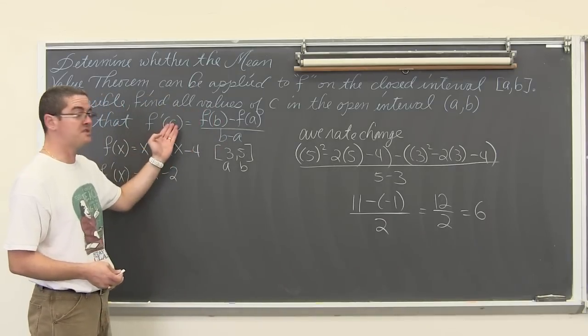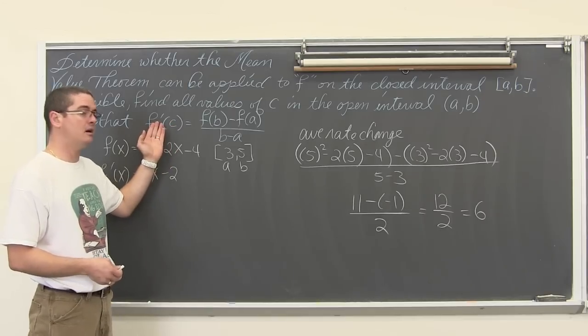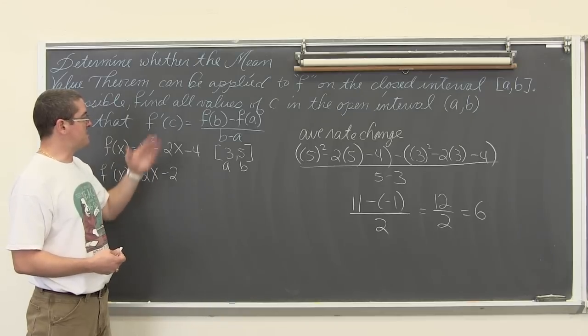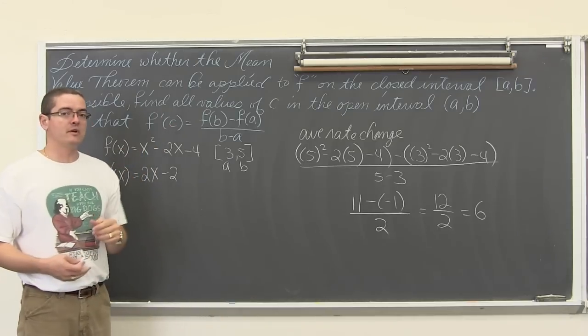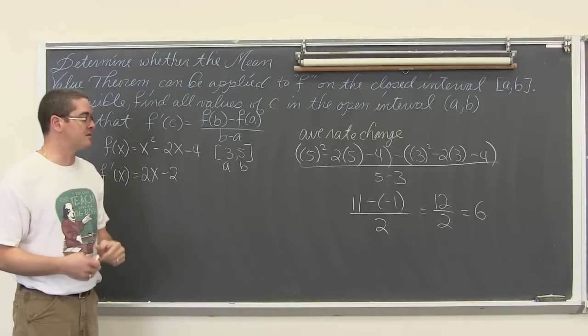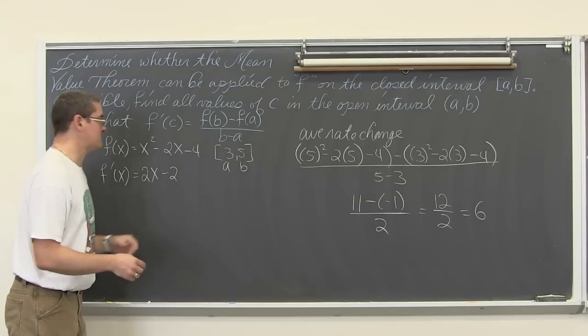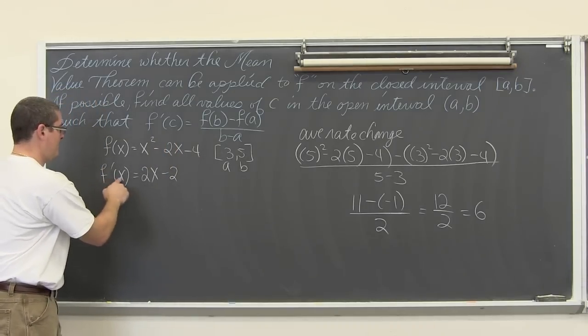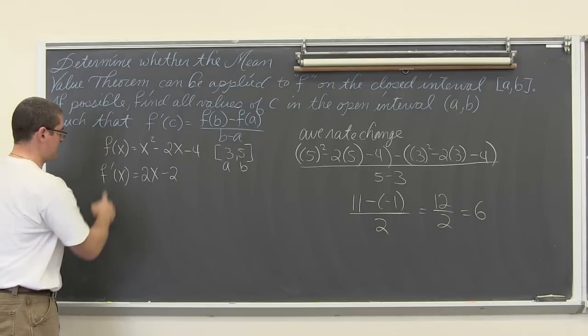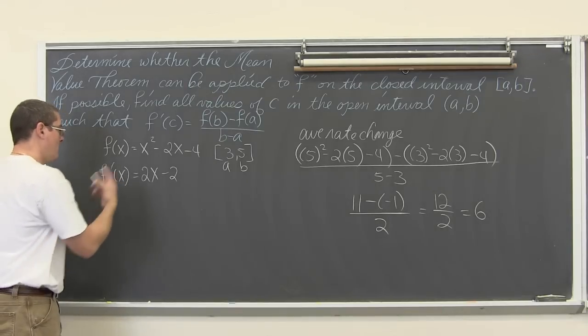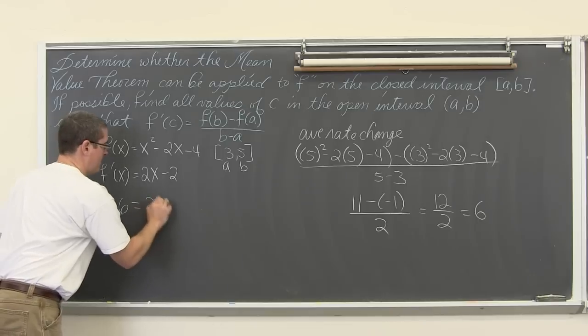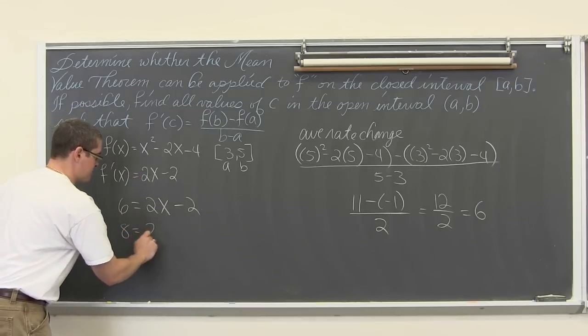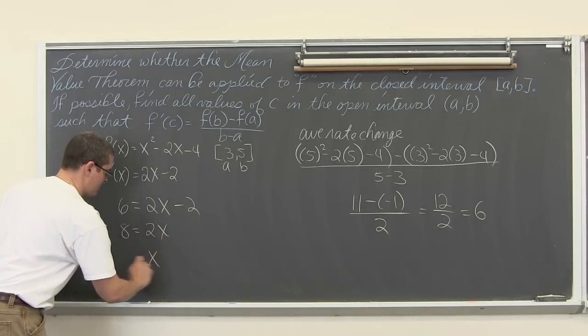So can we find a value of c such that the instantaneous rate of change, or the slope of that value of c, is there a value of c which makes the first derivative, the slope of the curve, the slope of the tangent line, equal to 6? Well I think so. It is a pretty basic formula here. So f'(x), or we are looking for c, the slope, well that is going to be 6 = 2x - 2, add 2 to both sides, we get 8 = 2x, and x = 4.